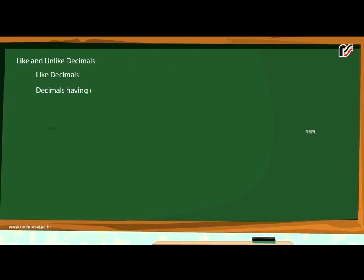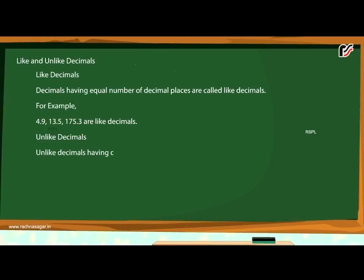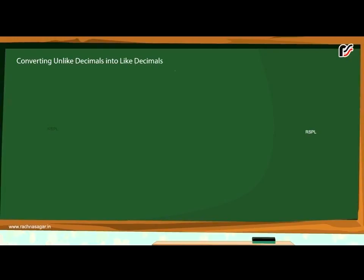Like and unlike decimals. Like decimals are decimals having an equal number of decimal places. For example, 4.9, 13.5, and 175.3 are like decimals. Unlike decimals have different numbers of decimal places. For example, 7.8, 15.09, 1.789, and 34.000 are unlike decimals.